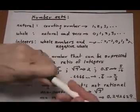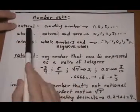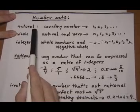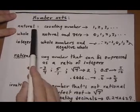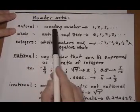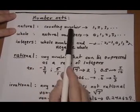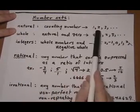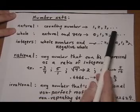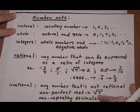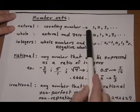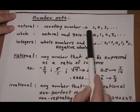First we start with the natural numbers. The natural numbers are just numbers you would use to count with — the counting numbers: one, two, three, four, going on forever to infinity. We don't include zero because we don't count with the number zero.